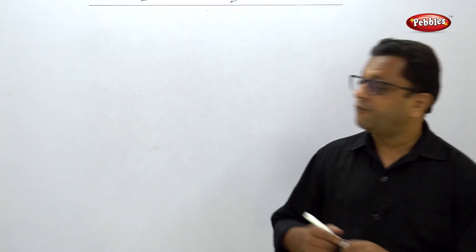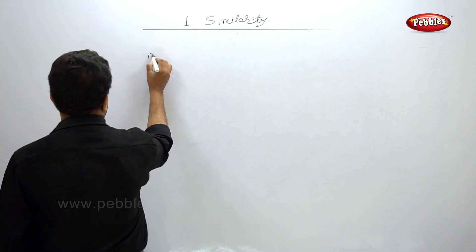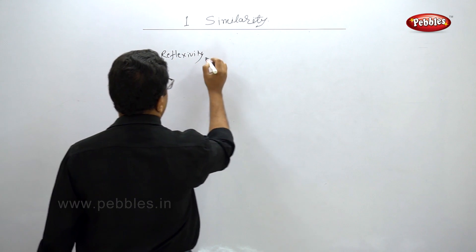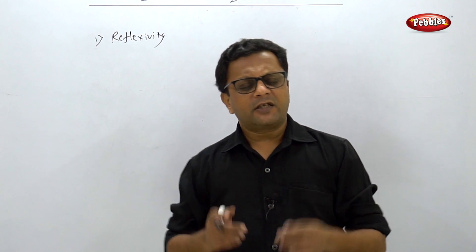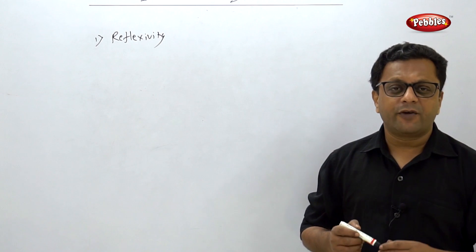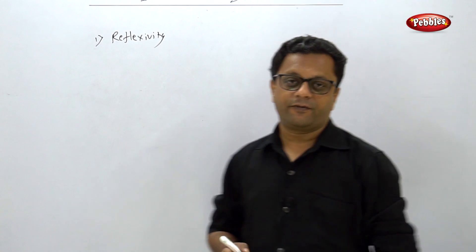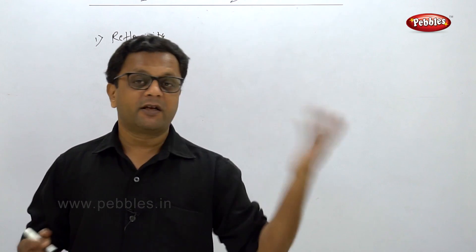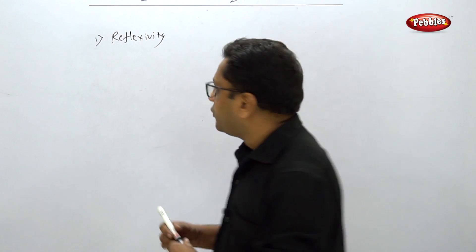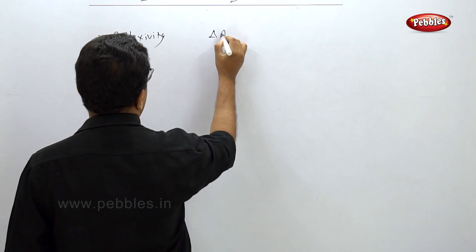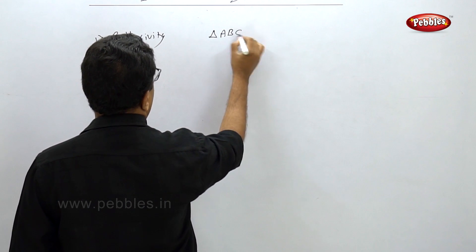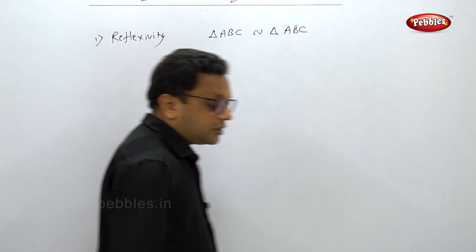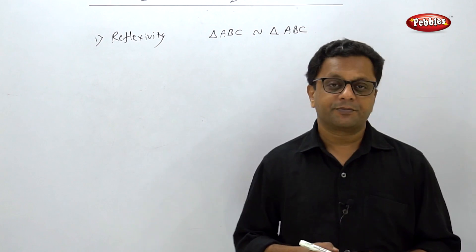Now let us see the properties of similar triangles. The first is reflexivity. Reflexivity means every triangle is similar to itself — like a mirror image. So if triangle ABC is there, then triangle ABC is similar to triangle ABC. This is called reflexivity.